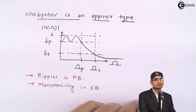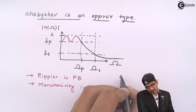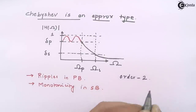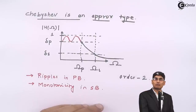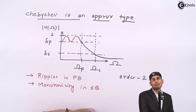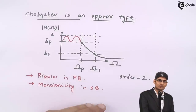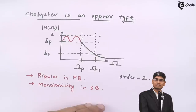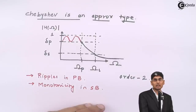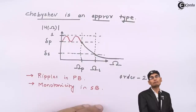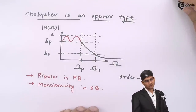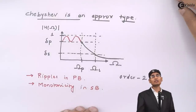For example, if I design a filter of order 2 using both Butterworth and Chebyshev, and the Butterworth roll-off rate is -40 dB per decade, then Chebyshev will provide around -60 dB per decade. The roll-off rate is much sharper in Chebyshev. So if one wants a very sharp transition from passband to stopband, one should choose Chebyshev over Butterworth, provided they can tolerate ripples in the passband.